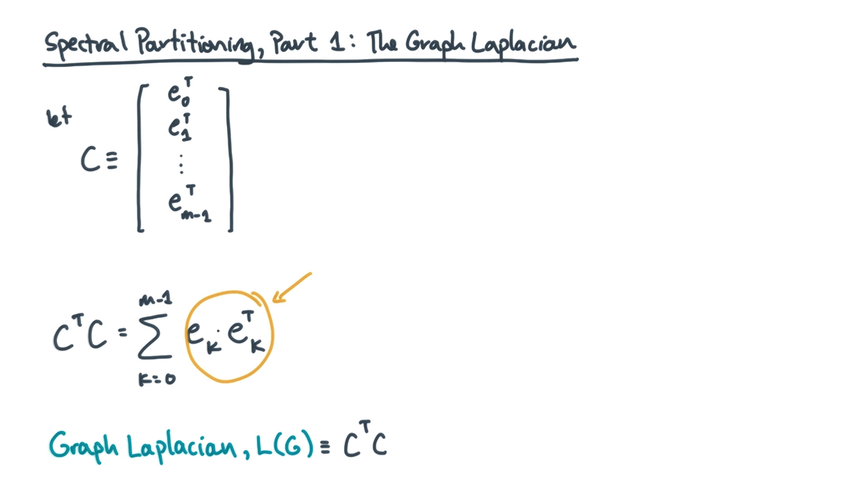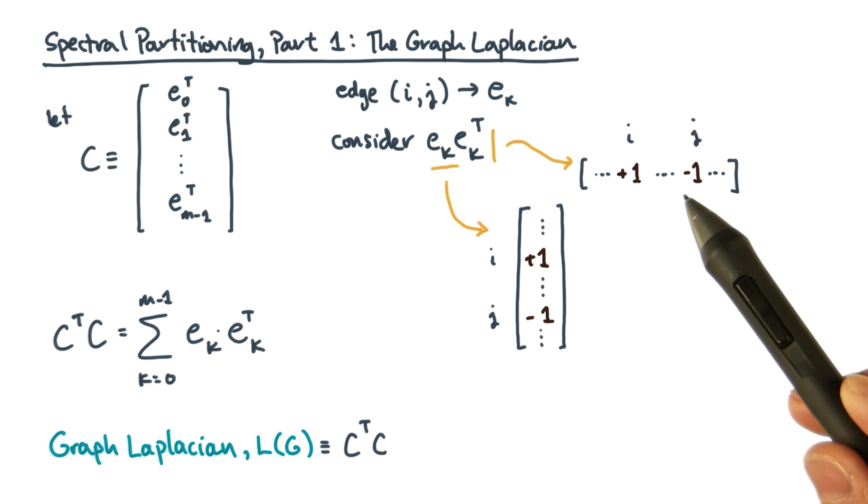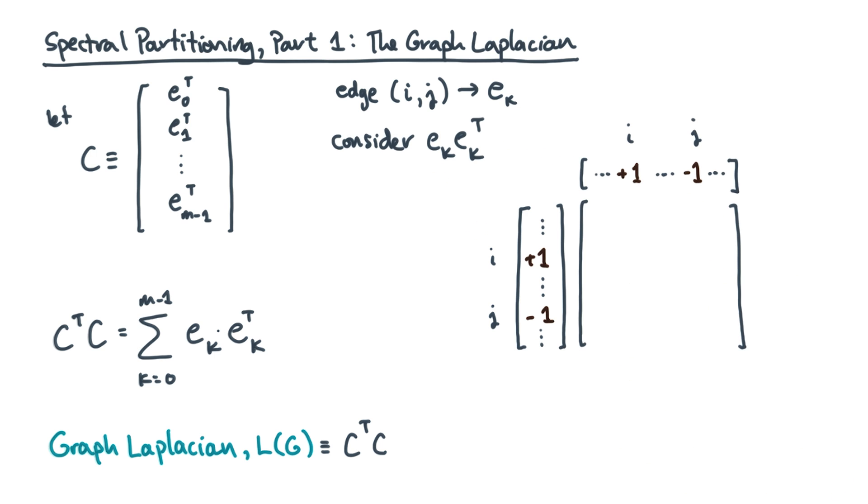Each E sub k is some edge. Let's call it ij. Remember that it's a vector with a plus one in the i-th position and a minus one in the j-th position. So what about the product? This product will be a matrix. And in fact, this product will only have nonzero entries in four places.